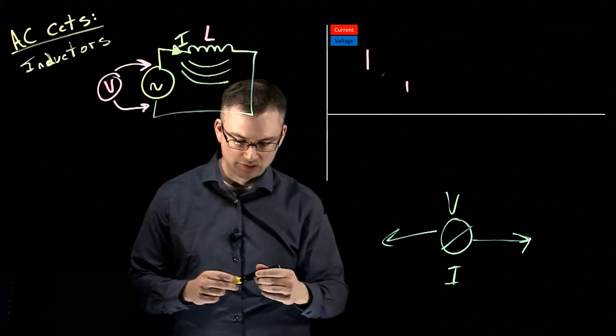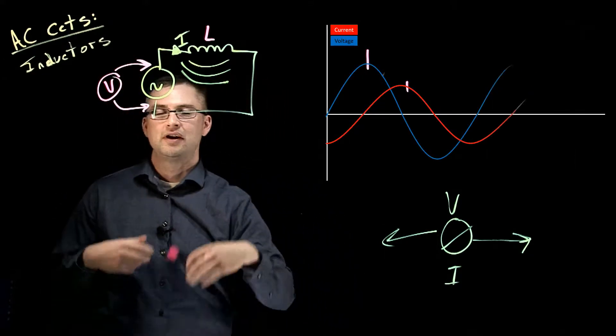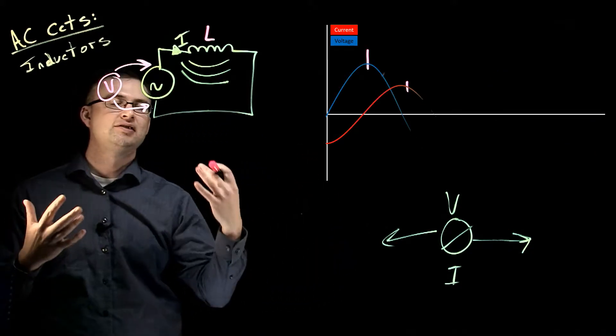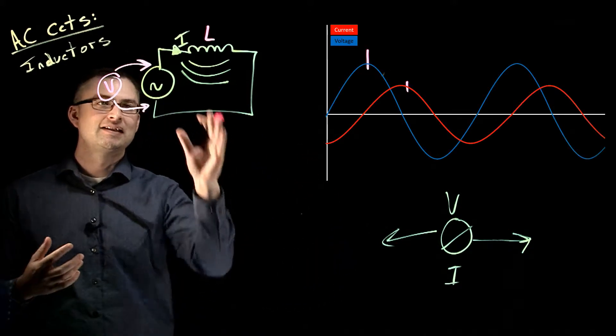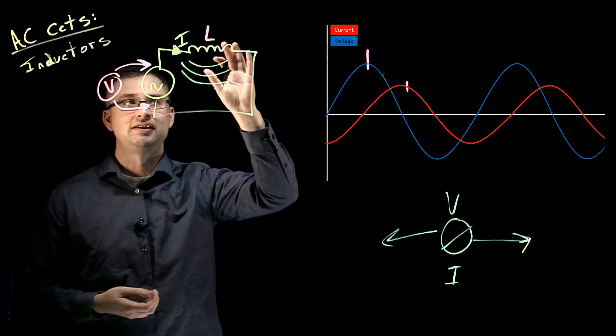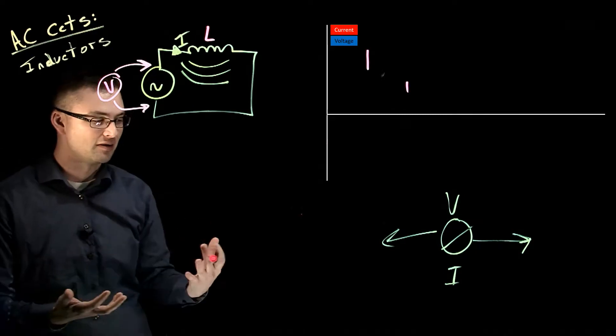It can allow current to flow. The source isn't the only source - this source here is one of two sources. The secondary source would be the expanding and contracting magnetic field around our inductor.